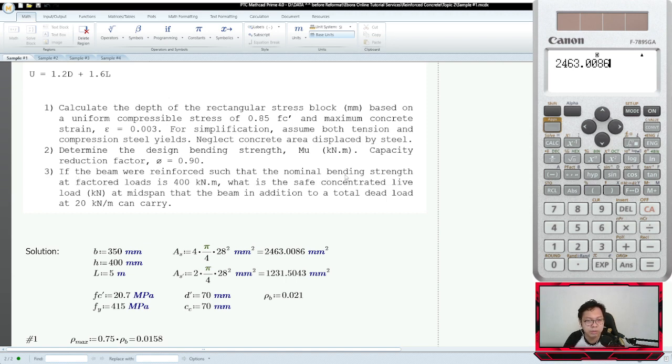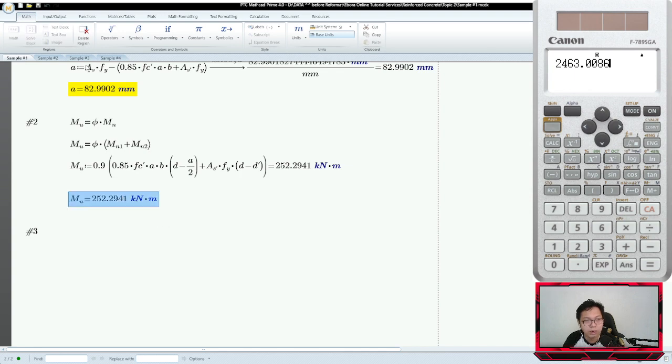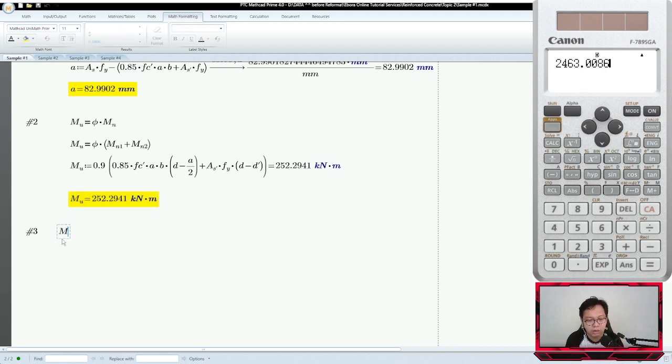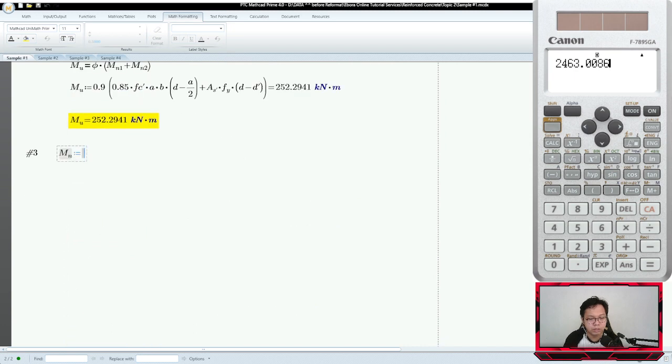If the beam is reinforced such that the nominal bending strength at factored loads is 400, what is the safe concentrated live load at mid-span that the beam, in addition to a total dead load of 20 kN per meter, can carry? The beam is reinforced such that the nominal bending strength - nominal, not ultimate - is 400 kN meter. So actually, what we solved earlier is not useful anymore because we're given a new design moment. In this case, our new MN is 400 kN meter.